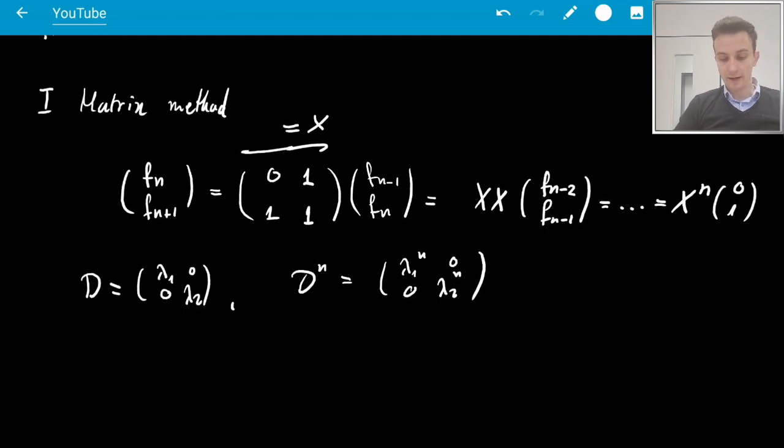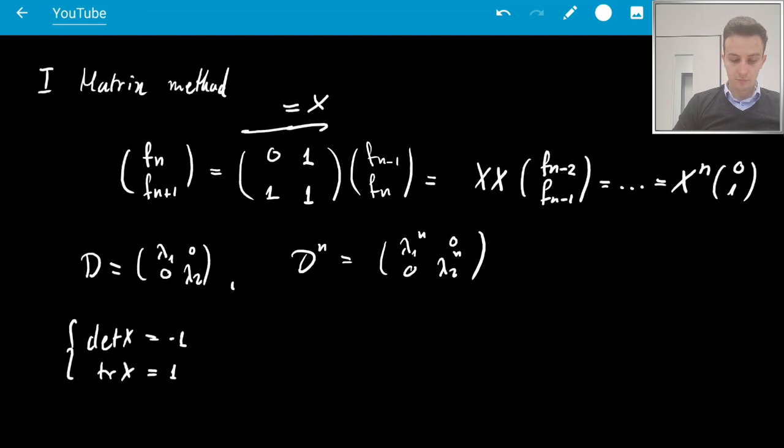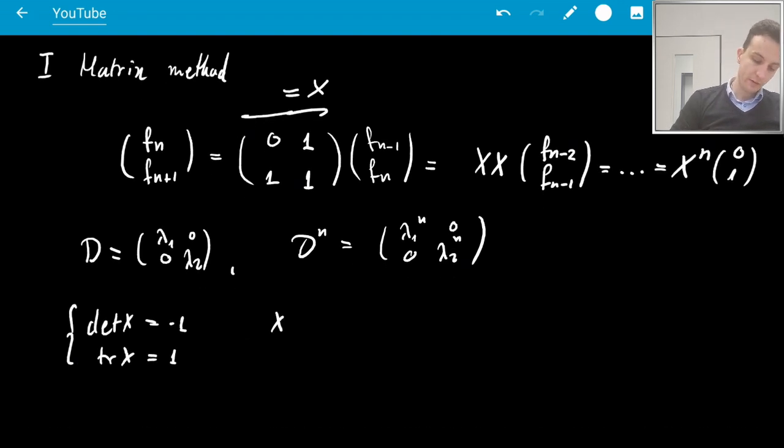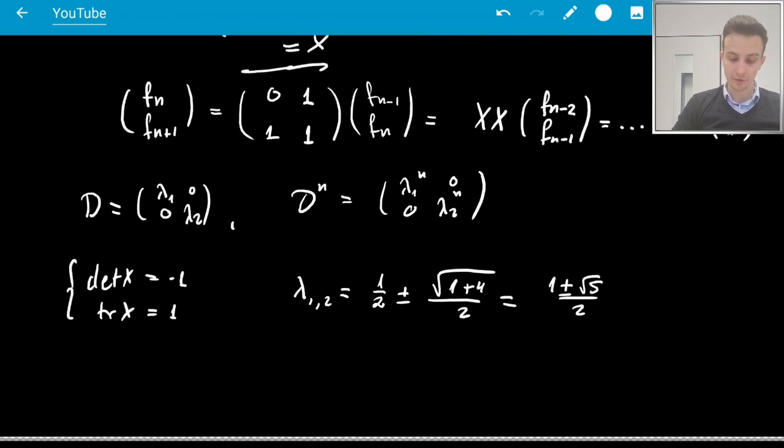But of course, x is diagonalizable because determinant of x is minus 1 and trace of x is 1. And okay, so it's diagonalizable. We have from this its eigenvalues as well. So you might refer to a previous video of mine if you're not familiar how to take eigenvalues of a 2 by 2 matrix, but it's going to be, so this is the trace and then the determinant times minus 4 and we get 1 plus minus square root 5 over 2, which are the golden ratio numbers, right?